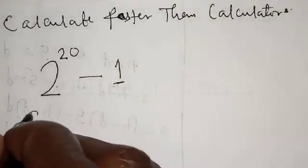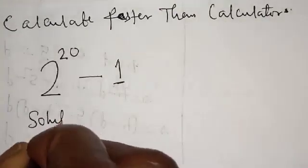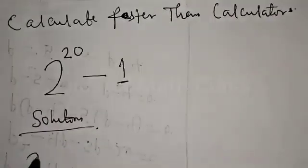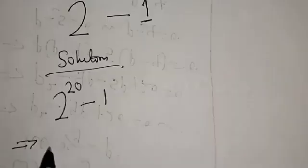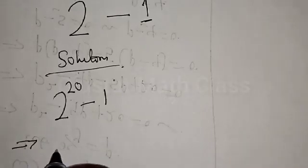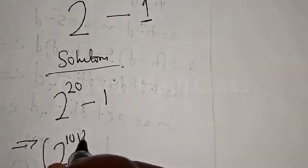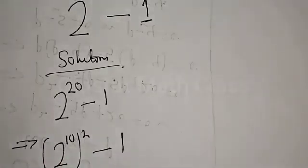Solution. We have 2 raised to power 20 minus 1. Now, 2 raised to power 20 can be expressed as 2 raised to power 10, squared, minus 1.